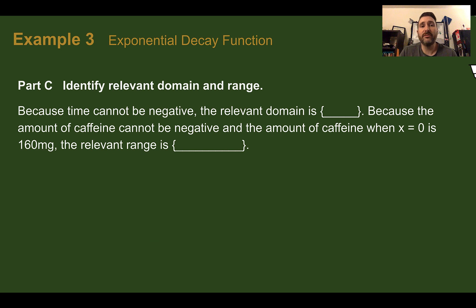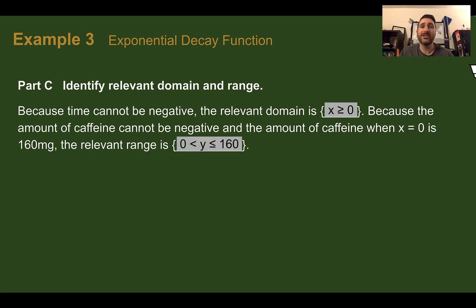Finally, identify the relevant domain and range. Time can't be negative, so the domain is x values greater than zero. Since we can't have negative caffeine, the range is really just the y values between zero and 160 — 160 was the most we could have from the energy drink, and zero is the least we could have.